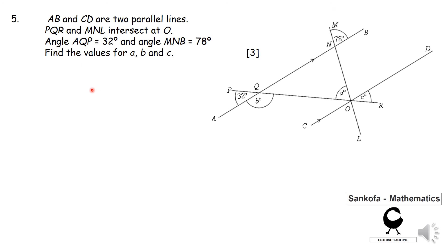Right, question five here. You can pause the video for this one, and then you can attempt to find angle a, angle b, angle c. You're also told that AB and CD are parallel lines, and PQR is a straight line, and it intersects at O. So PQR and MNL, they are intersecting here at O.